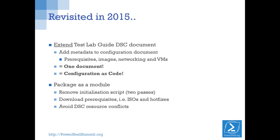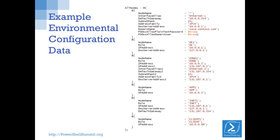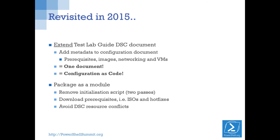Wouldn't it be great if we extended DSC and used that to deploy our lab? We know we need five virtual machines - the DSC configuration document says 'I want these.' If I wanted an extra client I could add it in. The non-node data is just a hash table - you can put anything in there. So why can't we add metadata like: this should be Windows Server 2012 R2, this one should be Server Core, this one is Windows 8.1, and what networks they need to be attached to?